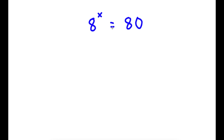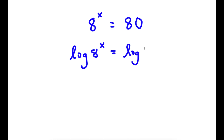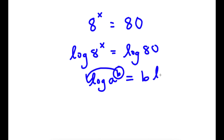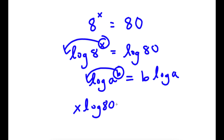In this problem, I have 8 to the power of x is equal to 80. To solve this, I'm going to first start by taking the log on both sides. So now I have log of 8 to the power of x is equal to log 80. If I have something in the form log a to the power of b, I can move the exponent to the front, giving b times log a. So I can move x to the front, and now I have x times log 8 is equal to log 80.